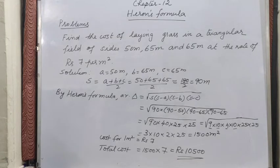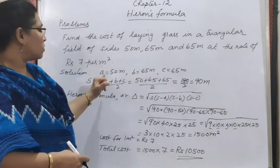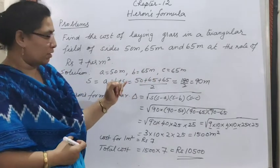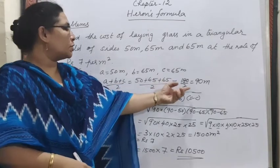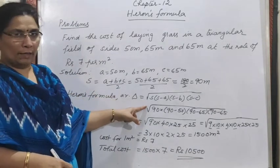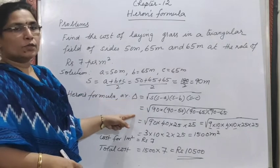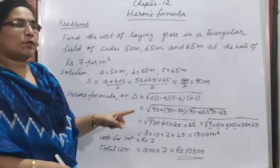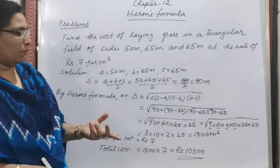To recap Problem 2: sides are a = 50, b = 65, c = 65. Semi-perimeter s = (50 + 65 + 65)/2 = 90 m. Using Heron's formula: area = √(90 × (90−50) × (90−65) × (90−65)) = √(90 × 40 × 25 × 25).